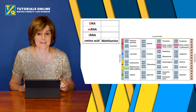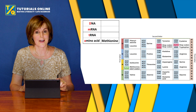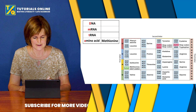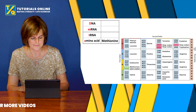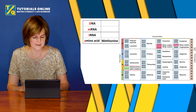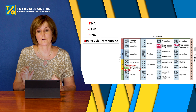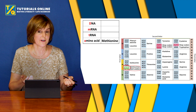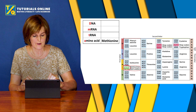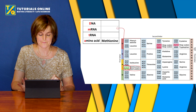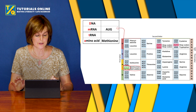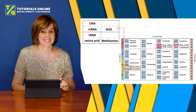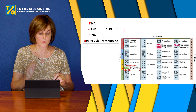One more example — this time we're given the amino acid: methionine. Now we have to work backwards. Looking at the table for methionine, the mRNA codon is AUG. So we write AUG at the mRNA level. Sometimes questions give you the amino acid and ask you to work out the DNA that coded for it — that's what we're doing now.